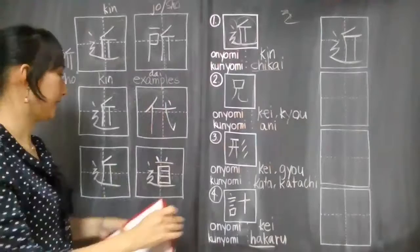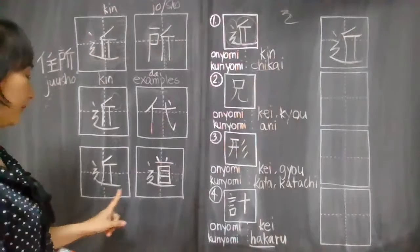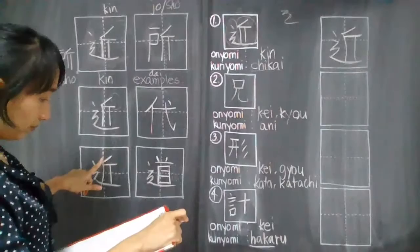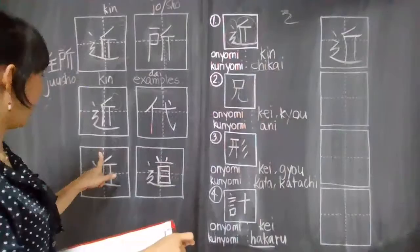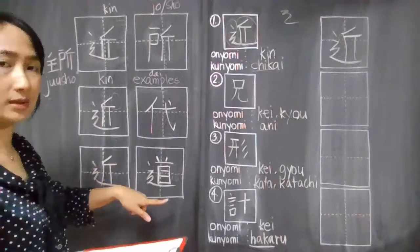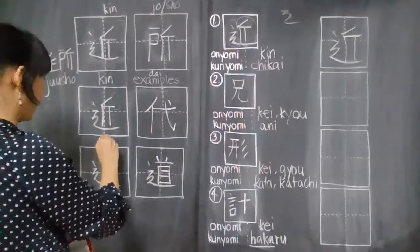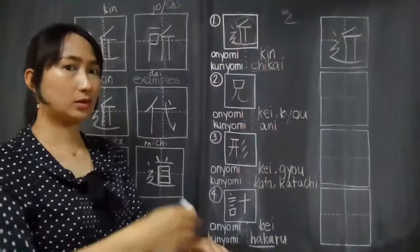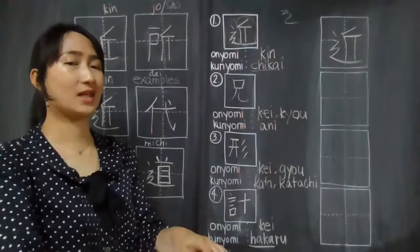The next one is this. Chikai no kanji plus michi no kanji. So this is chikamichi. Michi means street or road. Near road, so the meaning is shortcut. Shortcut or short way. Chikamichi. For example, please tell me the shortcut to go there. Chikamichi wo oshiete kudasai.